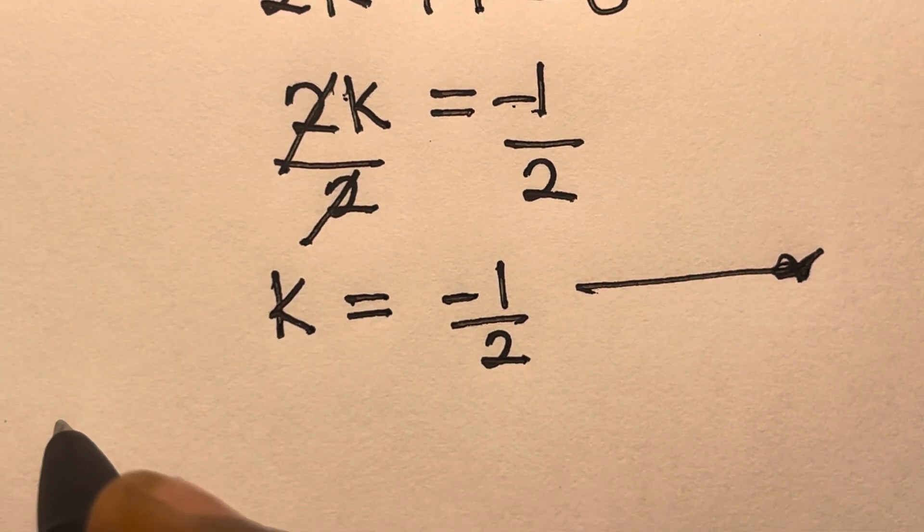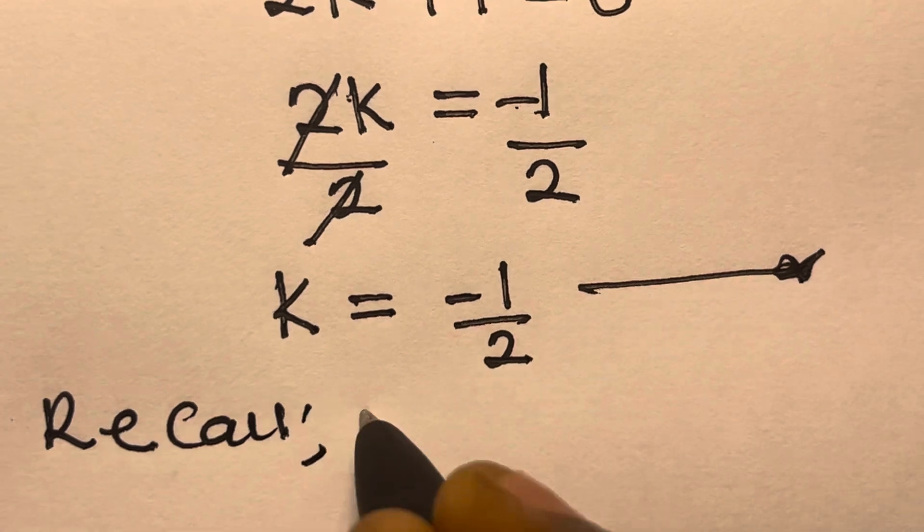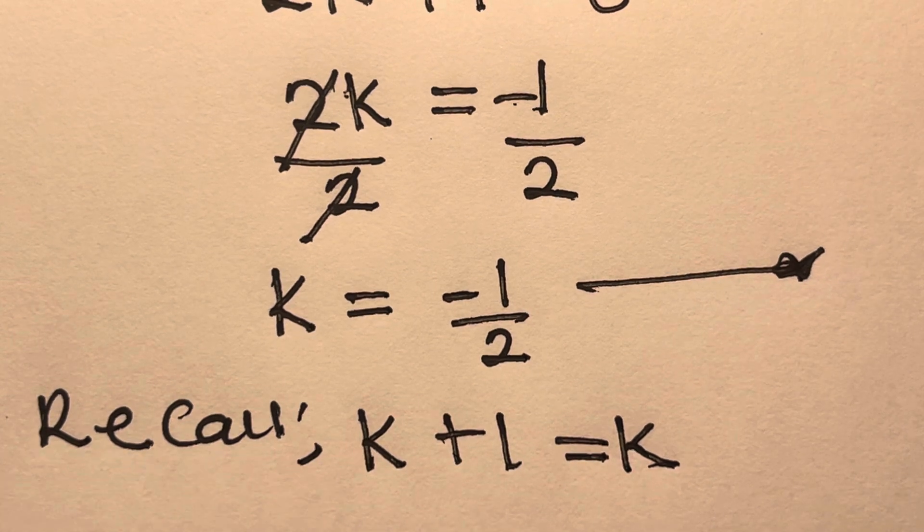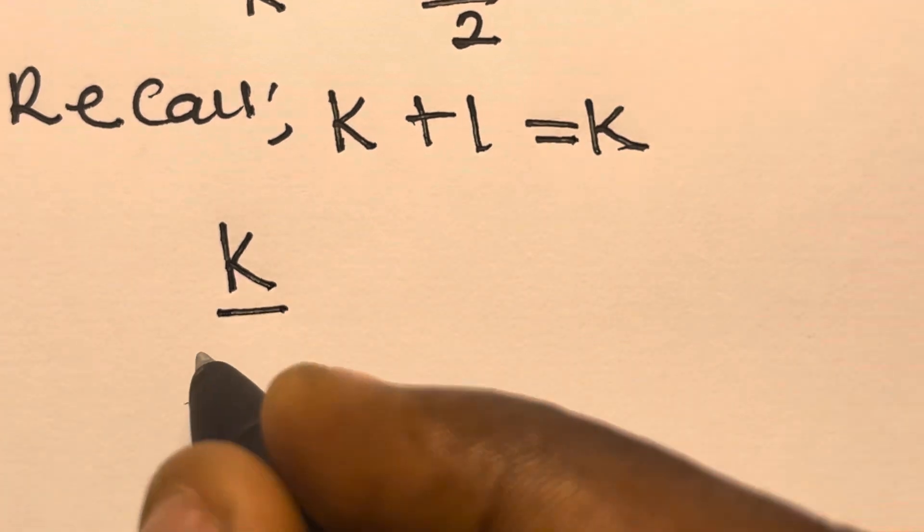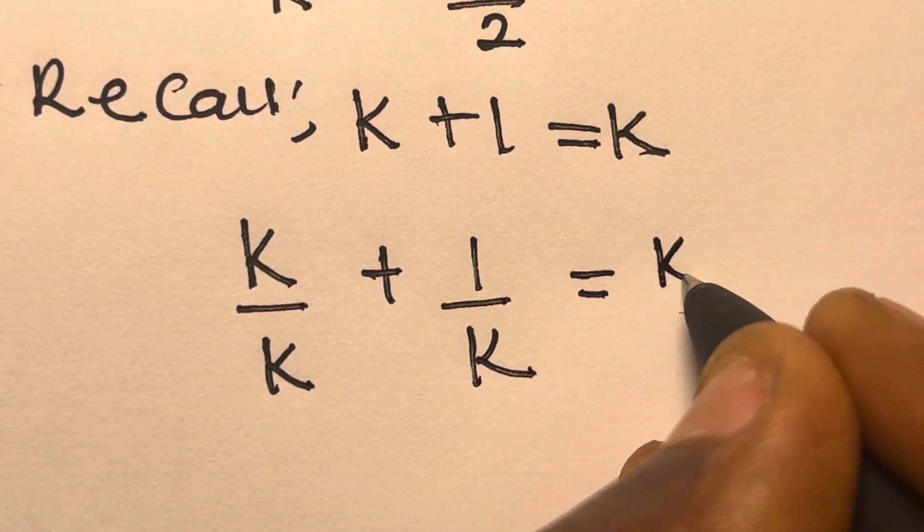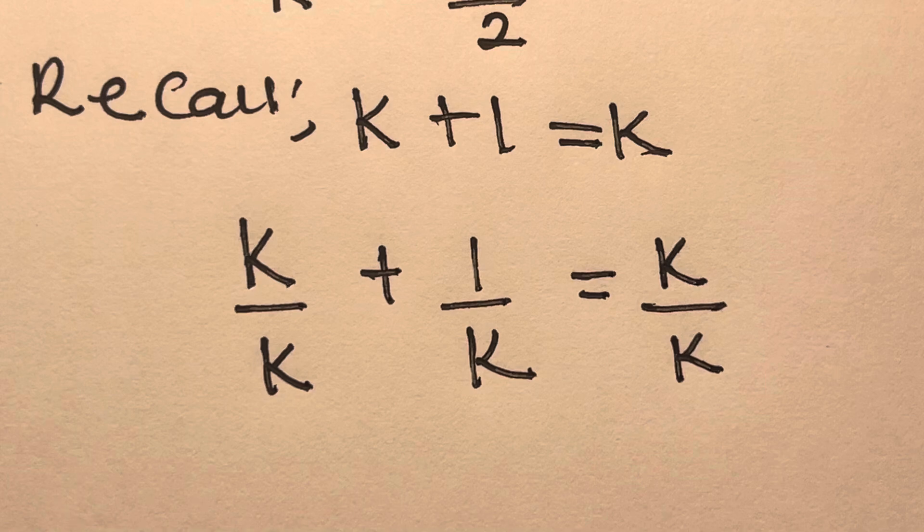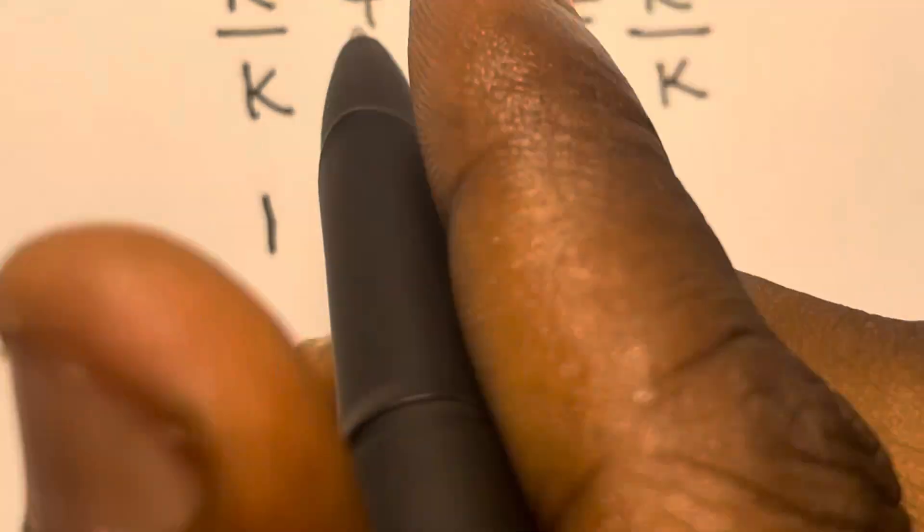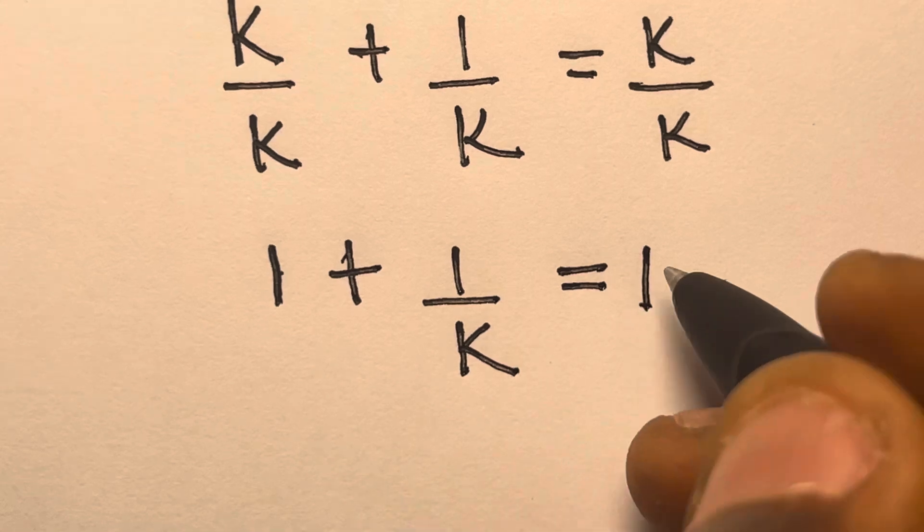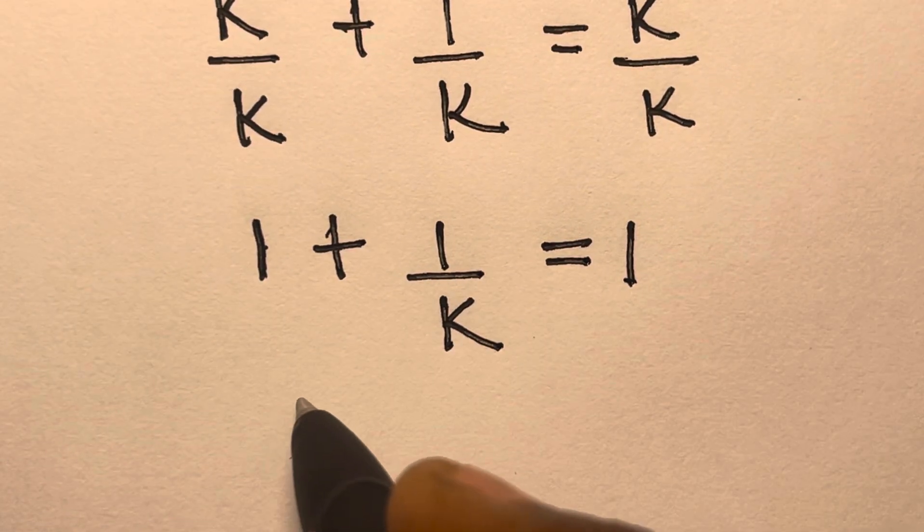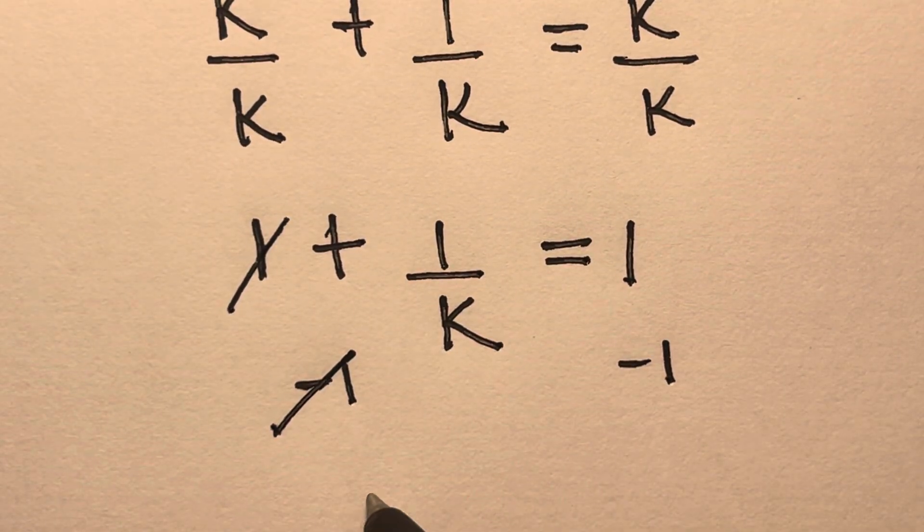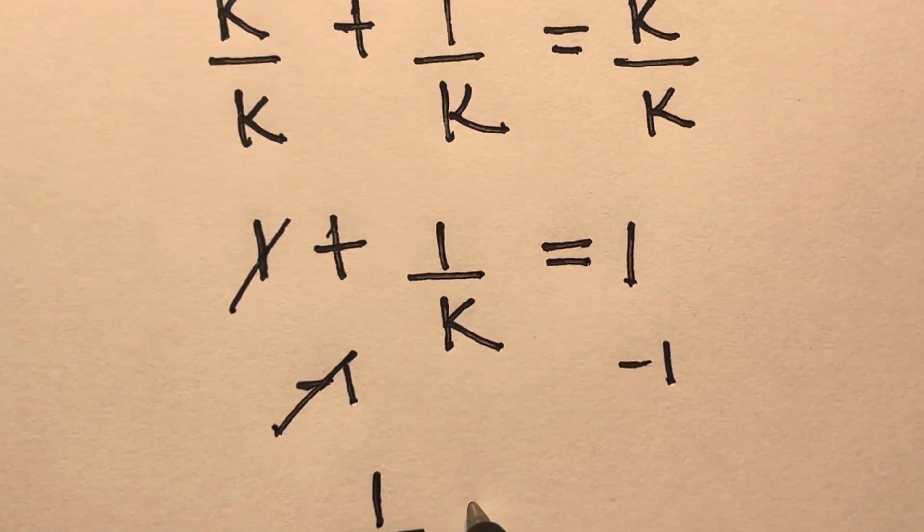But we have to recall. Recall that k plus 1 equals k. Right? So if you divide both sides by k, divide all three by k. So I'm going to have k divided by k plus 1 divided by k equals k divided by k. So now this will become 1 plus 1 divided by k equals 1. So now if you subtract 1 from both sides, this will cancel. So we have 1 divided by k equals 0.